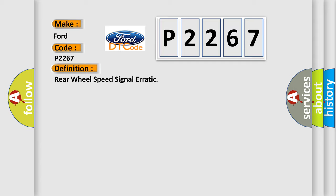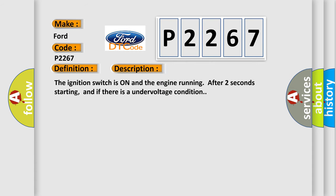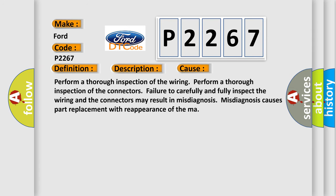The basic definition is: Rear wheel speed signal erratic. The ignition switch is on and the engine is running after two seconds of starting, and there is an undervoltage condition. This diagnostic error occurs most often in these cases. Perform a thorough inspection of the wiring and connectors, as failure to carefully and fully inspect them may result in misdiagnosis, causing part replacement with reappearance of the malfunction.